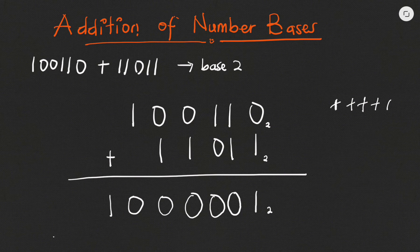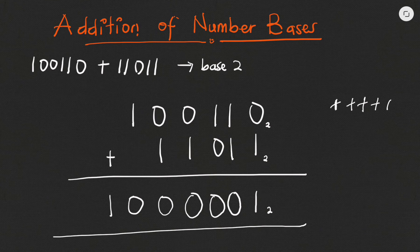Now I have nothing to add, so I just bring the one that I carried to the end over here. This becomes my answer in base two. So if you add 100110 with 11011 you'll get 10000001 base two as your answer.